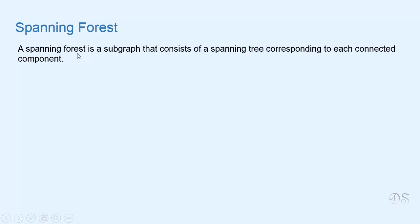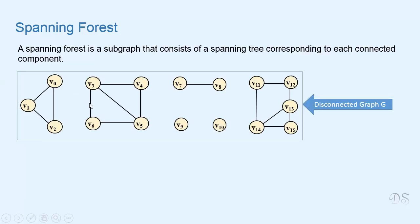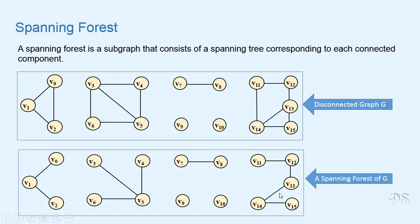A spanning forest is a subgraph that consists of a spanning tree corresponding to each connected component. For example, this is a graph that is not connected, and this is a spanning forest for this graph. There are six connected components in this graph, and corresponding to each connected component we have a tree in this forest, so we have six trees in this forest.